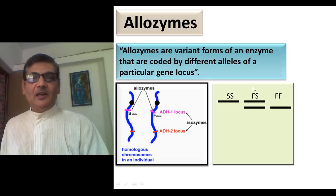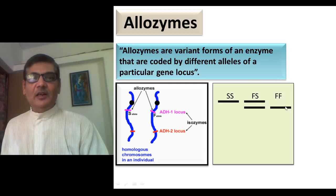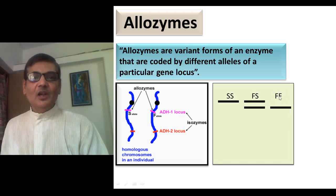In the other lane, two bands are visible. The lower one is the fast band and the upper one is the slow band. So the genotype of this second individual will be SF — that is, this individual is heterozygous. And in the third lane, a single band is there but that band is the fast one, so the genotype of this individual will be FF. This way, we can know an individual's genotype by seeing the type of protein present in the gel.